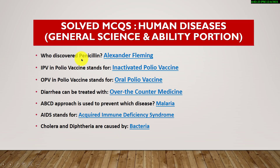Who discovered penicillin? Alexander Fleming. IPV in polio vaccine stands for inactivated polio vaccine. OPV in polio vaccine stands for oral polio vaccine. Diarrhea can be treated with over-the-counter medicine.